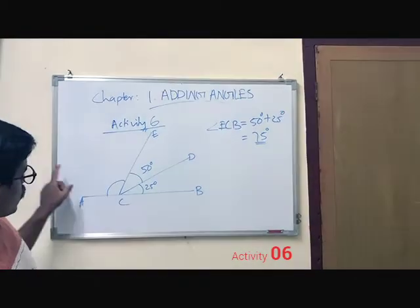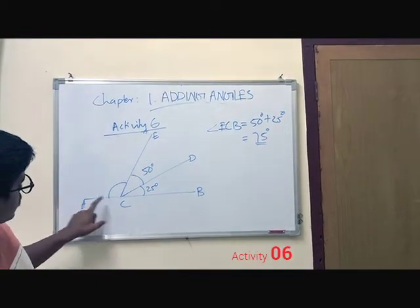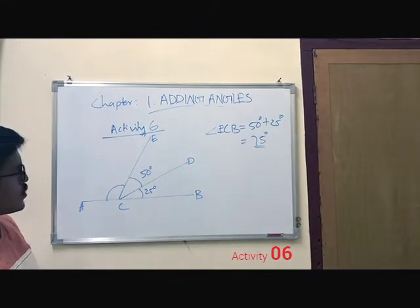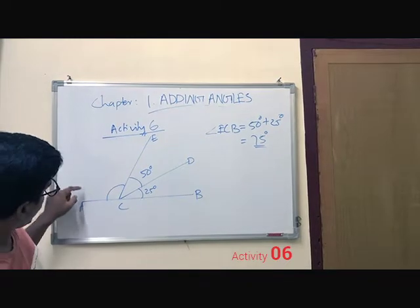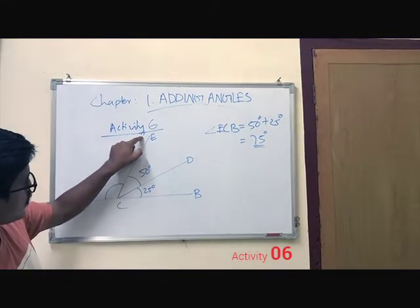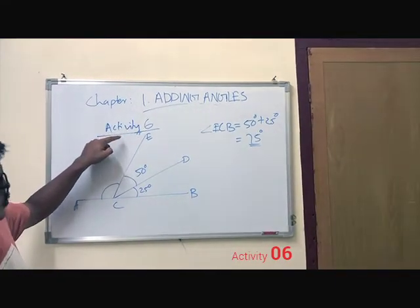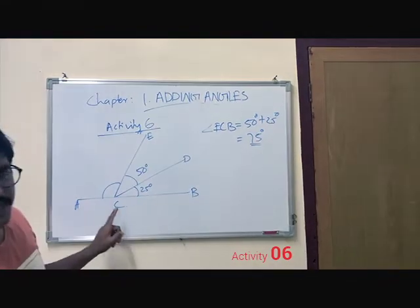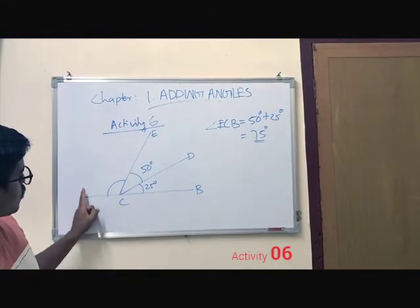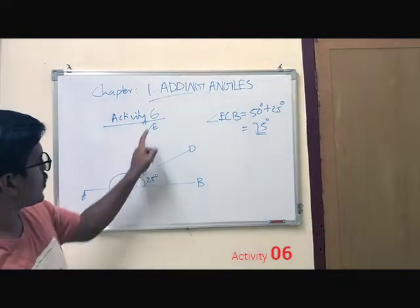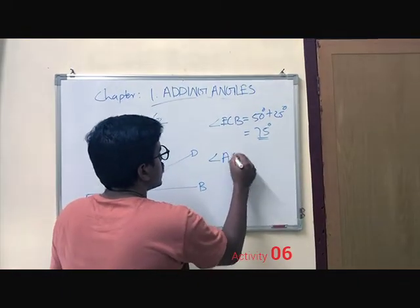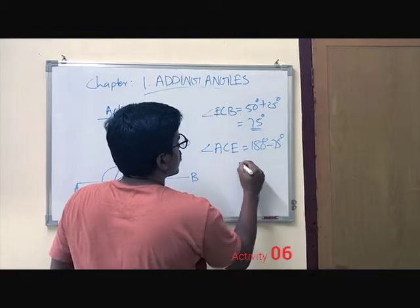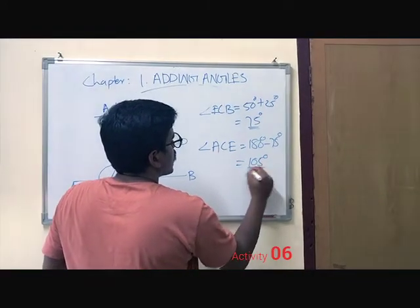Now you can see that angle A, C, E and angle E, C, V are linear pairs. So we can find out the measurement of angle A, C, V by subtracting 75 from 180. Then angle A, C, E equals 180 degrees minus 75 degrees, that is equal to 105 degrees.